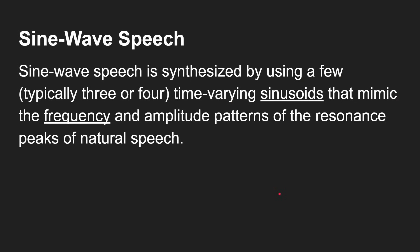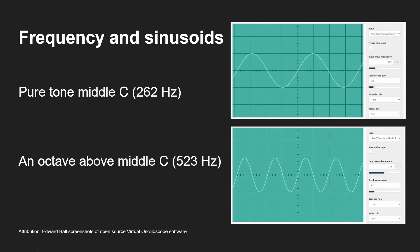What you've been listening to is what's called sine wave speech. Sine wave speech is synthesized — it's not just taking the original and degrading it. It's actually artificially generated based on the original, using sine waves that mimic the frequency and amplitude patterns of the resonant peaks of natural speech. This is a sine wave — middle C is 262 hertz. At 523 hertz, the peaks and troughs are closer together, giving a higher frequency.